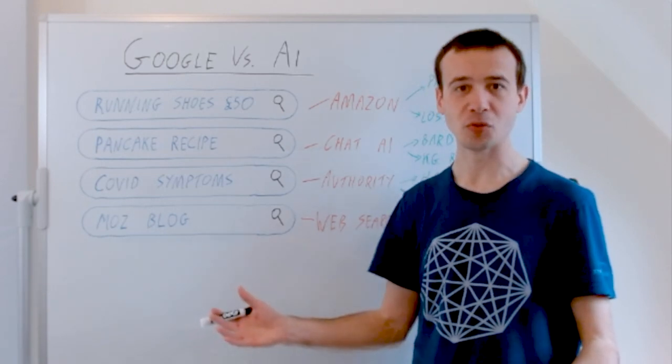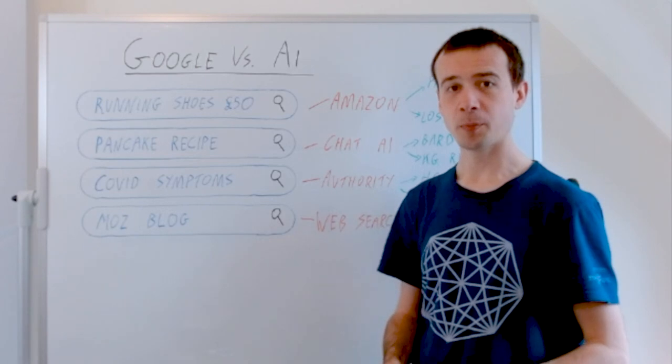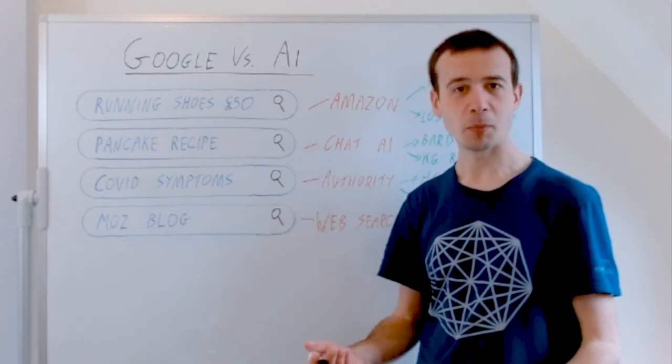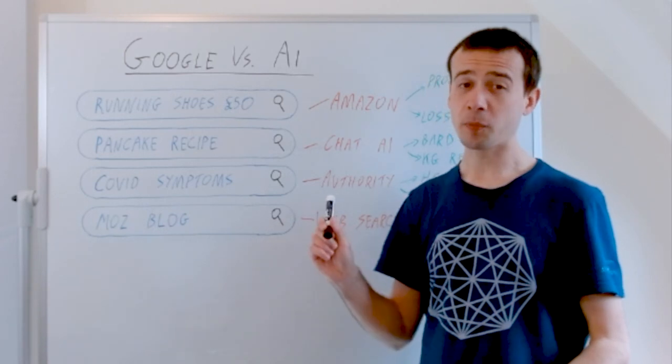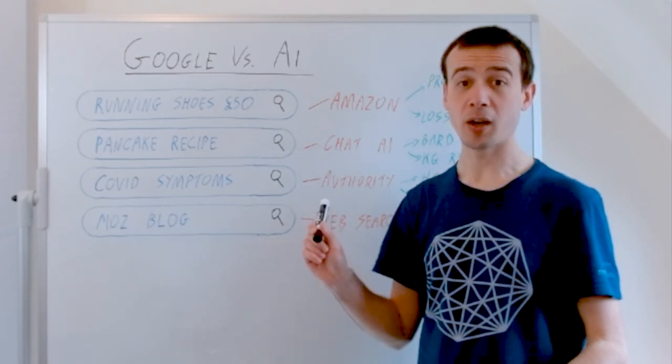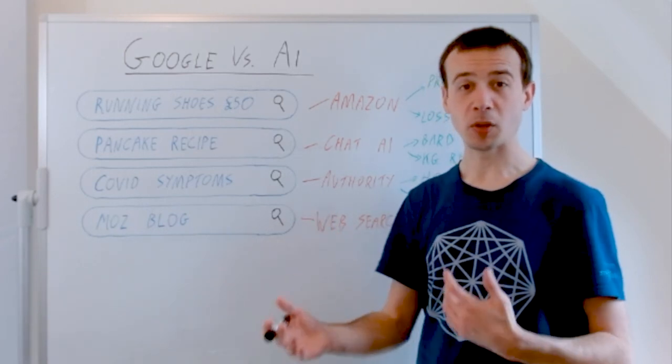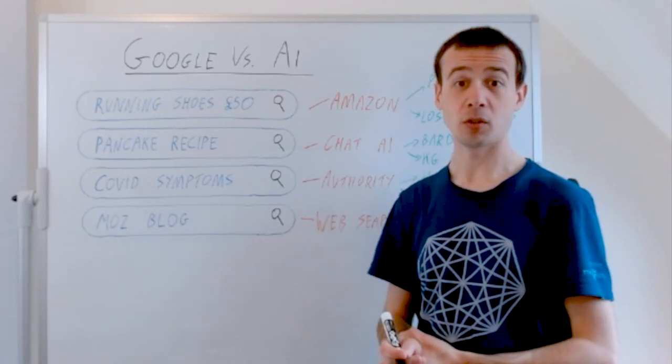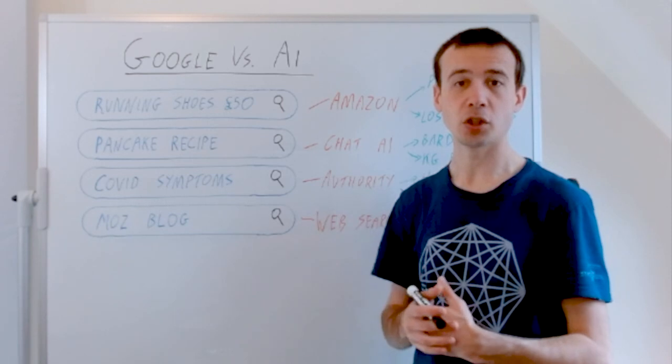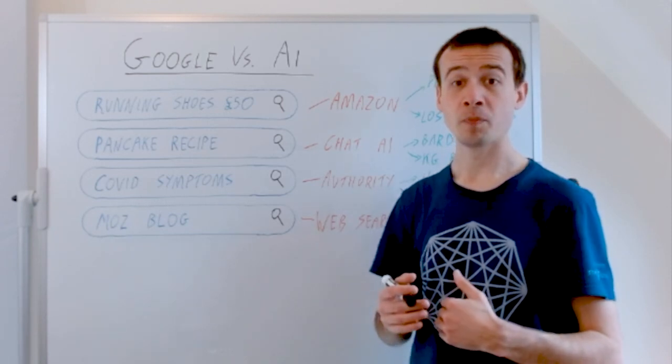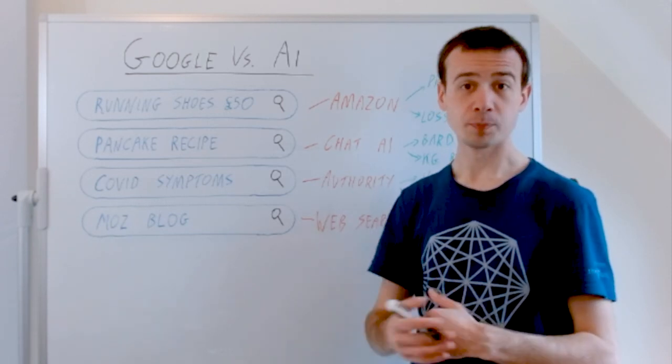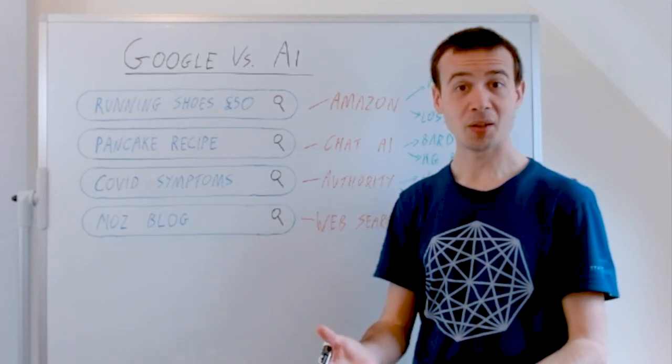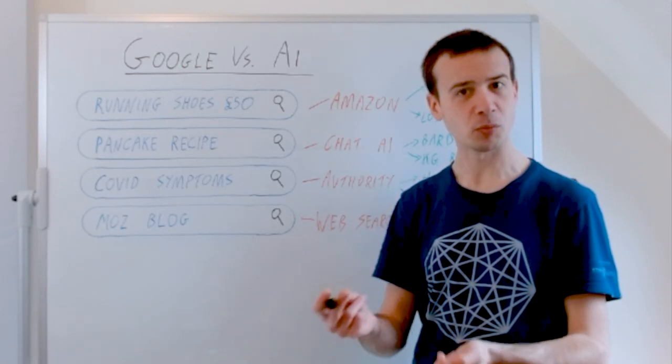This is not representative of everything people use Google for, which is even more varied. But I've got a commercial query: running shoes £50. A lot of people know now, and the data has been around for a few years, Amazon is actually a bigger product search engine than Google in the US. More product search journeys start on Amazon than on Google. That's not anything to do with large language models, but that's some context to this scenario for Google.